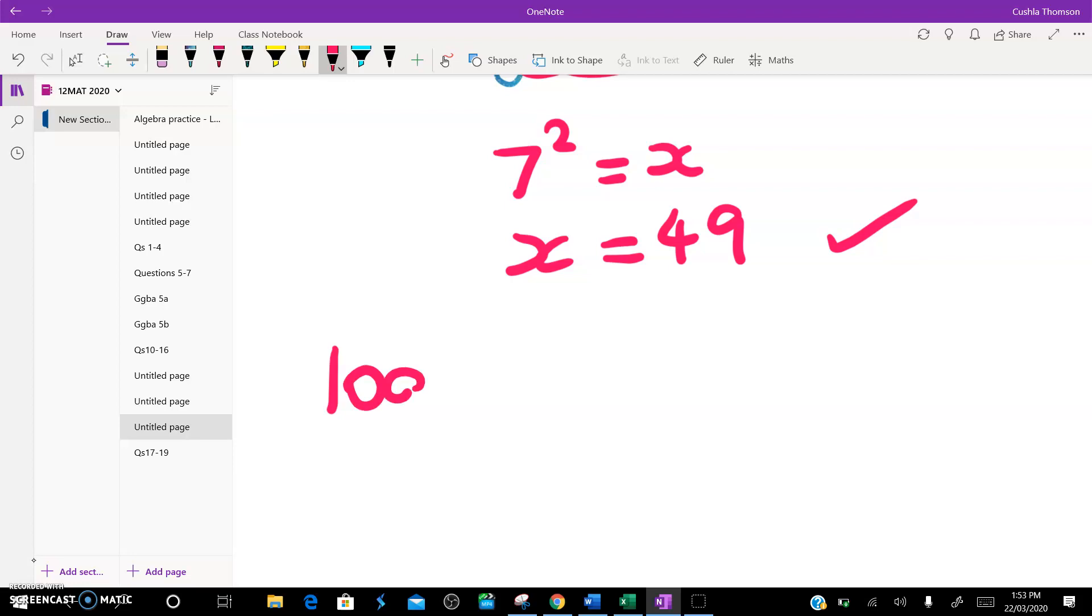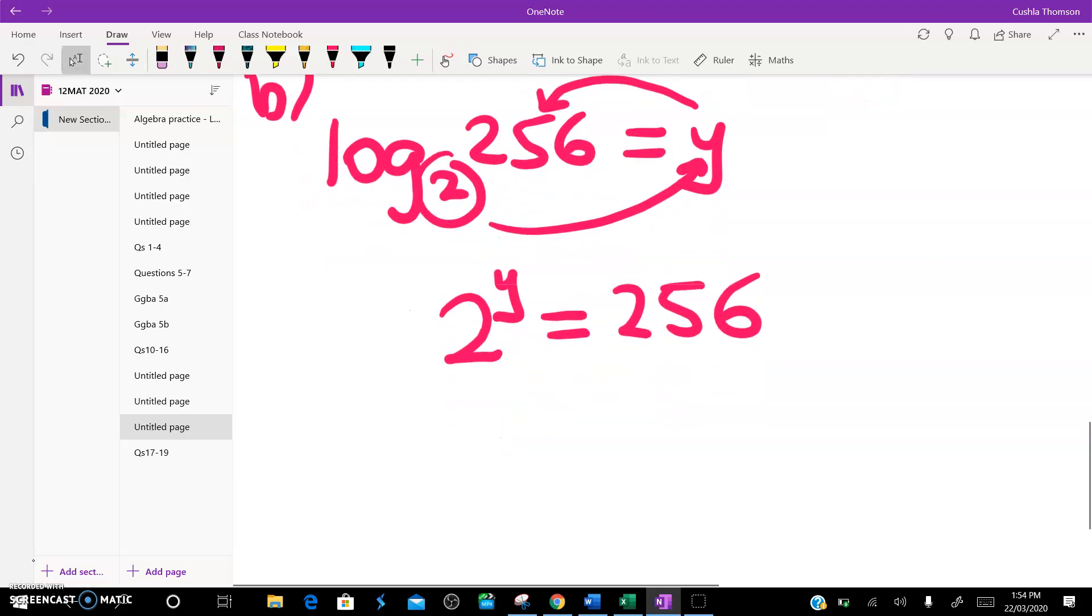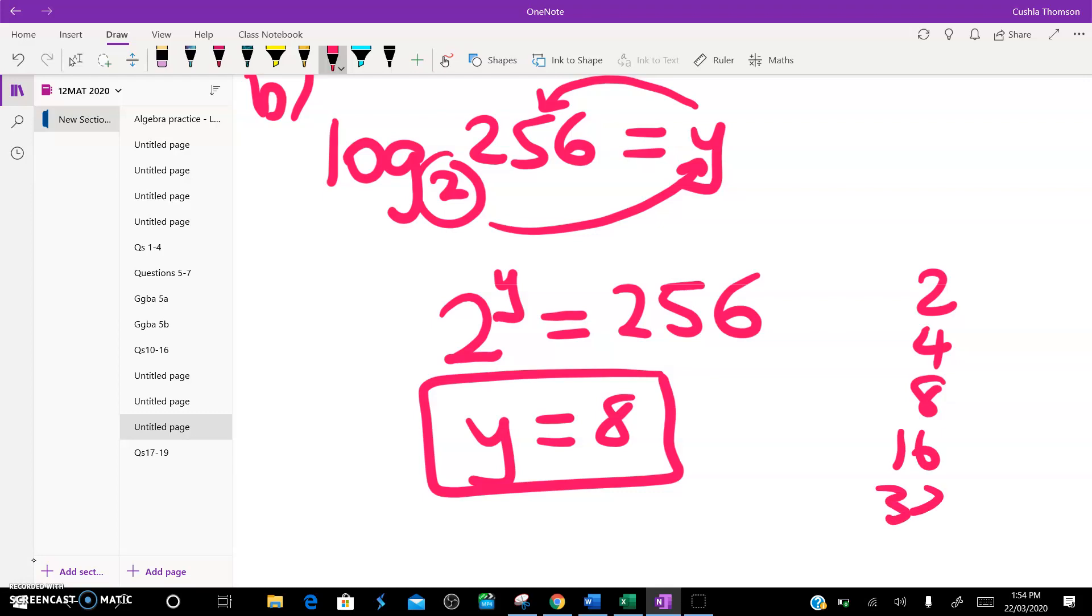The next one. Log to base 2, this is 7b, of 256 is equal to y. So we're going to do the loopy thing again. This to the power of this equals this. 2 to the power of y is 256. Now this is one where you've just got to skip count on your fingers, right? So 2 to the power of 5 is 32, 64, 128, 256. y is equal to 8. So you can just jot that down. 2, 4, 8, 16, 32, and so on, until you hit this one here.